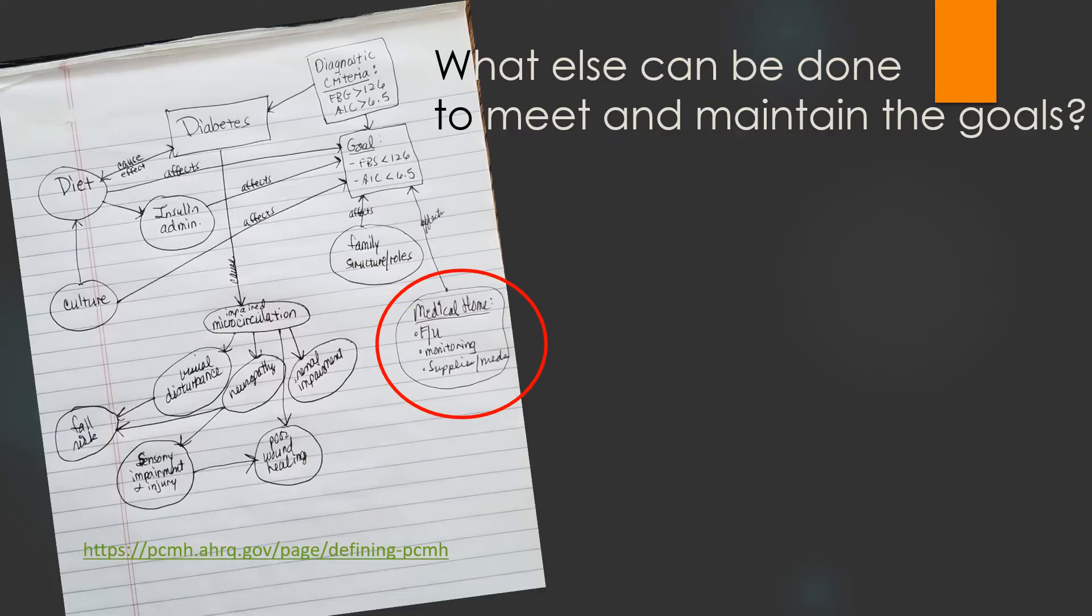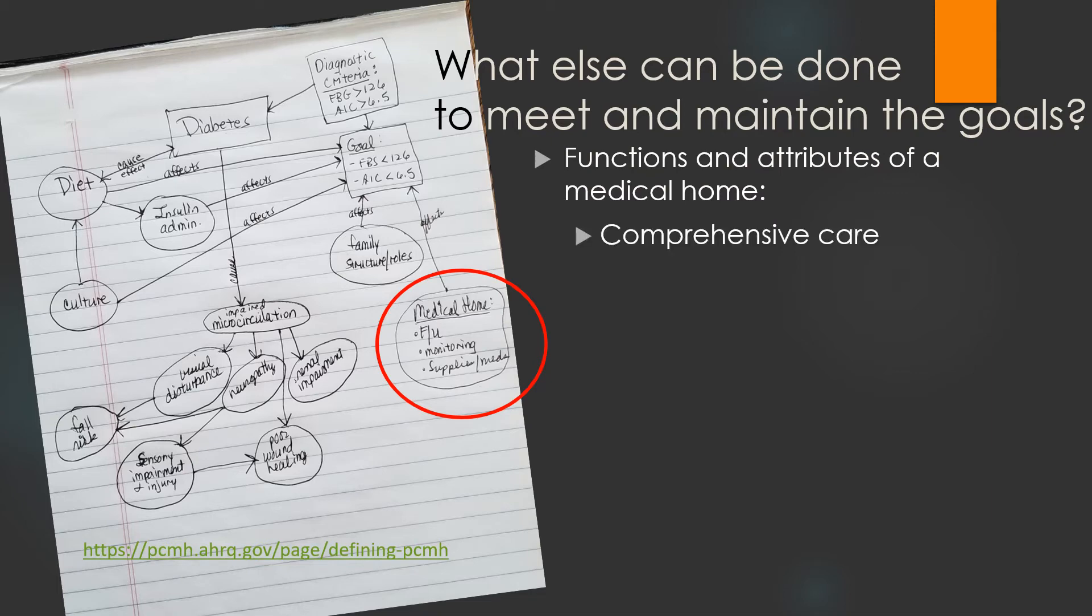What else can be done to meet and maintain the goals? Thinking about what can impact the problems associated with impaired microcirculation, I recognize the concept of a medical home as a critical component. The Agency for Healthcare and Research Quality defines a primary care medical home as not simply a place, but a model of the organization of primary care that delivers the core functions of primary health care.